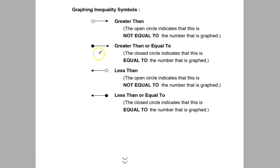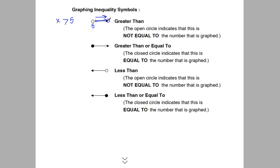For graphing these, if the inequality is just greater than, it will be an open circle. For example, if we have x is greater than 5, you would put this circle right at 5. Because x is on the left, this acts as the tip of the arrow pointing to the right, so you would shade in everything going to the right. If it is x is greater than or equal to 5, it would be a shaded-in circle, again pointing to the right.